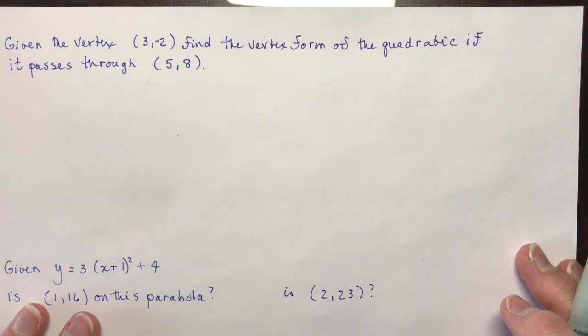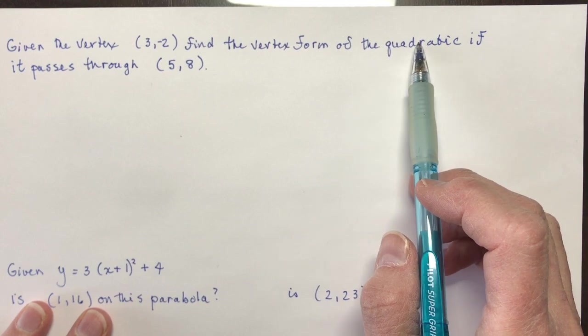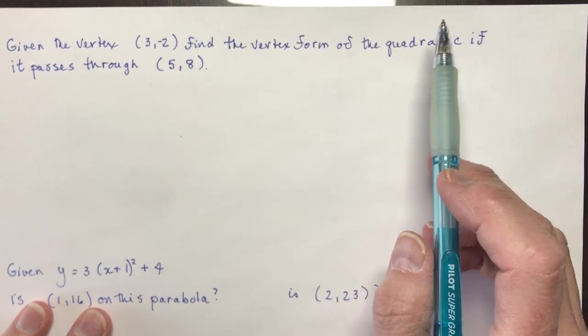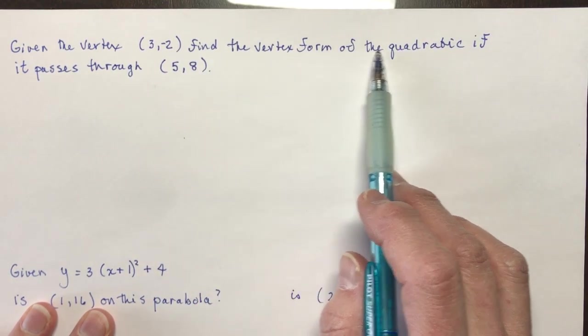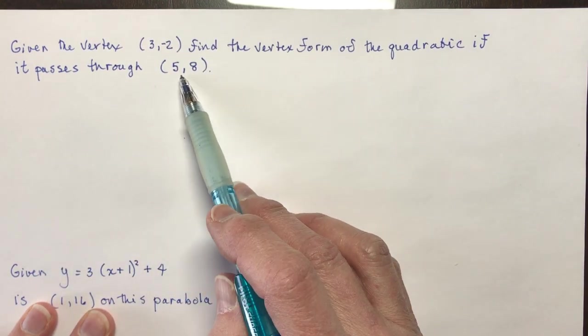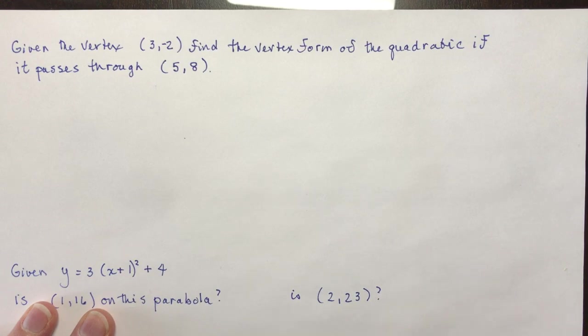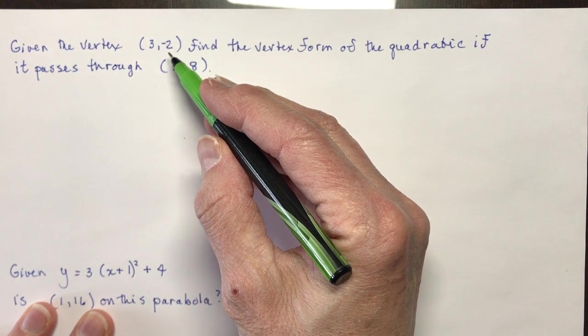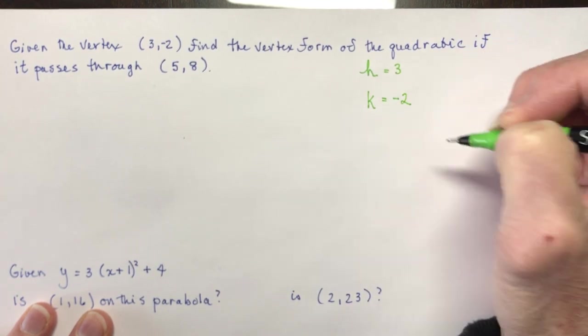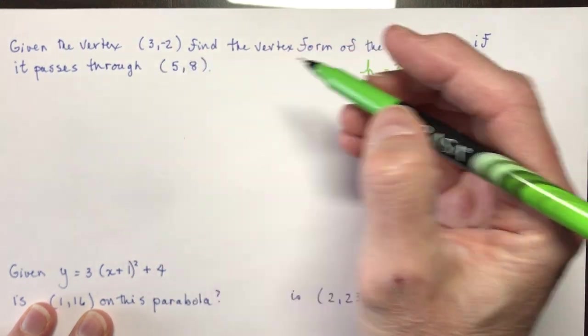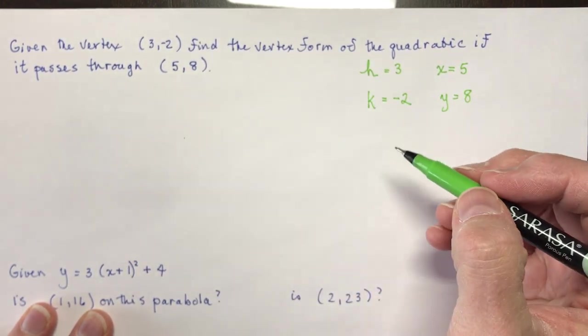So this time you're given the vertex, 3 minus 2. It says find the vertex form of the quadratic. Okay, so you're probably saying, why does she keep saying vertex form? This is one of the forms of a quadratic. We're going to do vertex form, factored form, and standard form. And each tells you something different, and we'll study those as we go along. So it says find the vertex form of the quadratic if it passes through 5 and 8. Okay, so when you're given information in any question, identify what each one of these values is representing. So given the vertex 3 minus 2, that means I know that h is going to be equal to 3, and I know that k is equal to minus 2. And it passes through 5, 8. So that means that x is going to be 5, and y is going to be 8. Because you know these are just coordinates of a point on the quadratic.